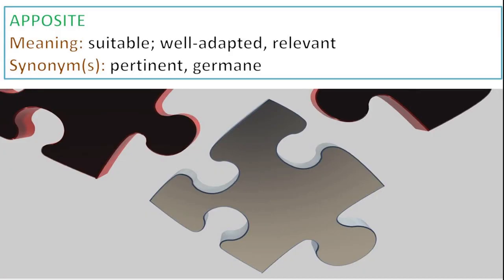Next is apposite. You might confuse this with opposite, which is completely different. Something that is apposite is fitting or relevant. Like we say: it's apposite to decorate your home on Diwali, or it's apposite to make sure that you pay your taxes before the end of the financial year. Something that is pertinent or germane is also a synonym for this — apposite means pertinent or germane, meaning suitable or well adapted.